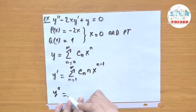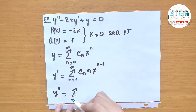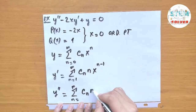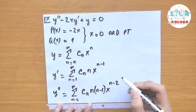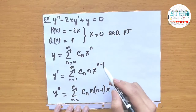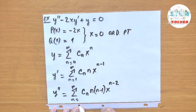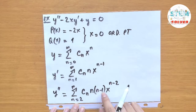Now take the second derivative. We have c_n times n times (n minus 1) times x to the n minus 2, bringing down the exponent and subtracting by 1. This time n starts at 2 instead of 1, because when you plug in 1, it makes that term become 0.